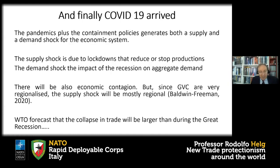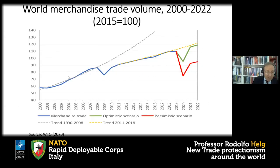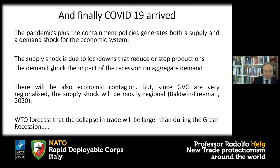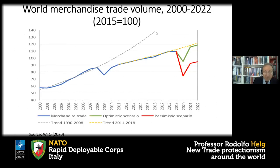Finally, on the COVID shock: the pandemic plus containment policies generate both a supply and a demand shock. The supply shock is due to lockdowns that reduce or stop production. The demand shock is due to the recession's impact on aggregate demand through the reduction of consumer income. Since global value chains are very regionalized, the supply shock will likely be mostly regional. The WTO forecast for the collapse of trade is that it will be larger than during the Great Recession.